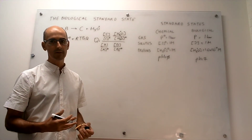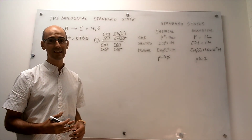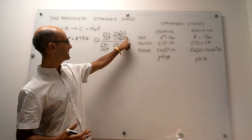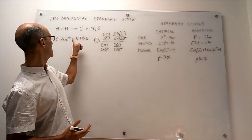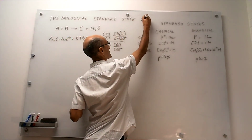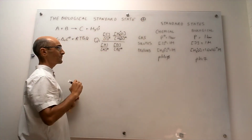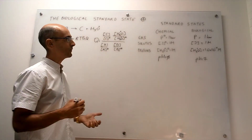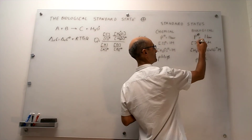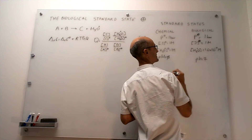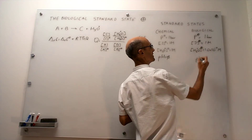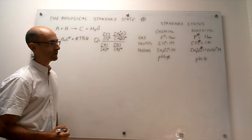We denote this biological standard state a little bit differently from the chemical standard state. Instead of the usual symbols, for the biological standard state we use a plus sign inside a circle. So these will represent the standard pressure and standard concentration at the biological state.